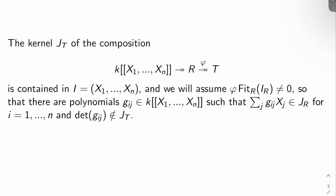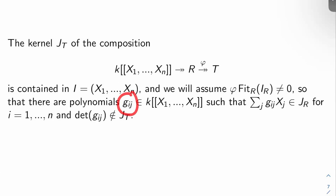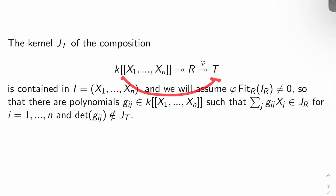Consider the composition: we have phi from R to T, and R is a quotient of K double-bracket X_1 through X_n, so we also have a surjective map from that ring to R. Look at the full composition and call its kernel J sub T. This kernel is contained in the ideal I generated by X_1 through X_n. We assume — as we're allowed to, given the theorem — that phi of the R-Fitting ideal of I sub R is zero. Unwinding definitions, this tells you there are polynomials G sub ij in K double-bracket X_1 through X_n such that the sum of G_ij X_j's lies in J sub R for i = 1 through n, but the determinant of the G sub ij's is not in J sub T — so they're zero in R but not zero under the full composition.